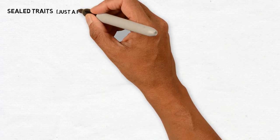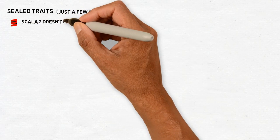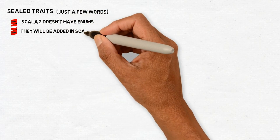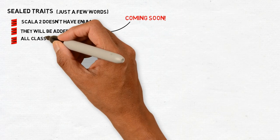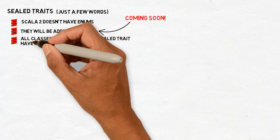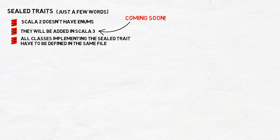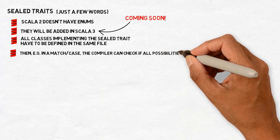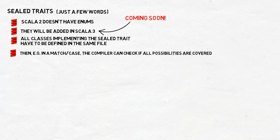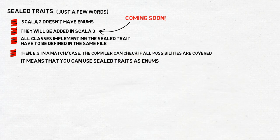Okay, sealed traits. We have already touched this subject a little, now let's talk a bit more. Scala 2 doesn't have enums, but sealed traits can be used for basically the same purpose and more. The sealed keyword means that all classes and objects implementing the sealed trait in question have to be defined in the same file. That, in turn, allows the compiler to check if a match case over instances of the sealed trait has all possibilities covered.